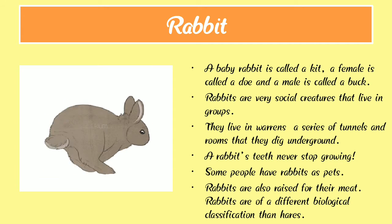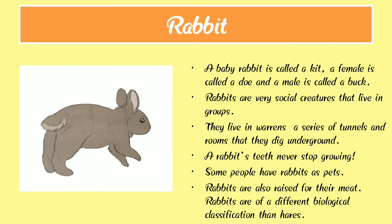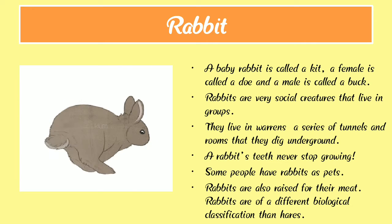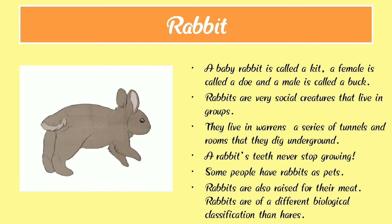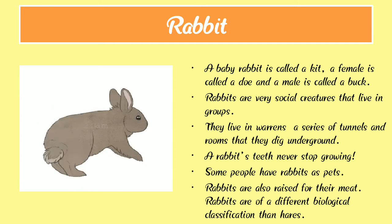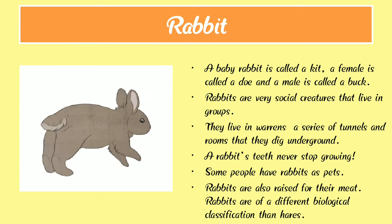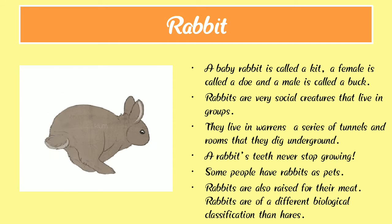Rabbits are also raised for their meat, and they are of different biological classifications. We find rabbits in different colors. Rabbits mostly eat carrots, their teeth never stop growing, and some people have rabbits as pets. They live in a burrow or dig underground.